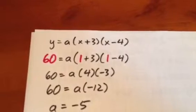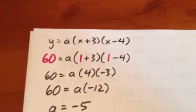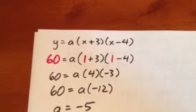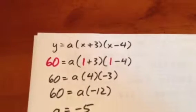What we want to do next is solve for A. So, we sub in the point (1, 60). 60 goes in for y, 1 goes in for x. So, 60 equals A times (1 plus 3) times (1 minus 4).